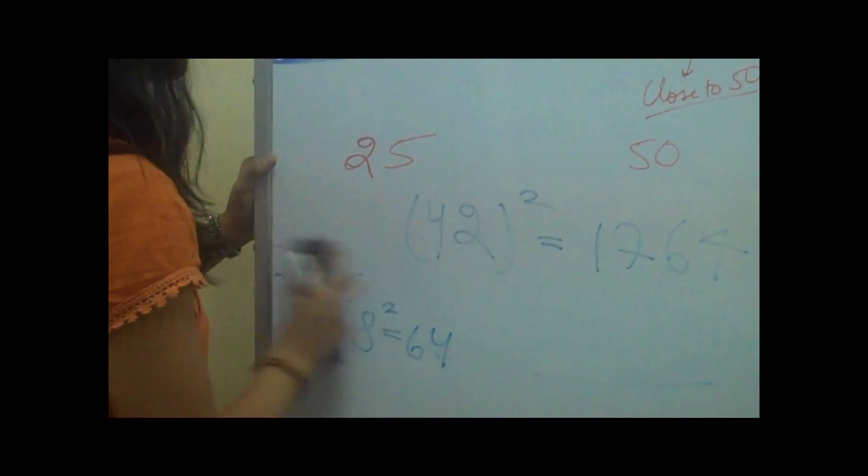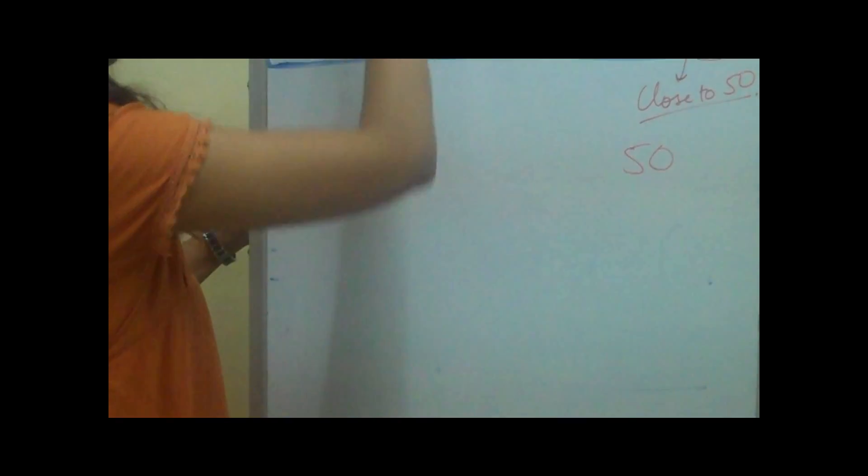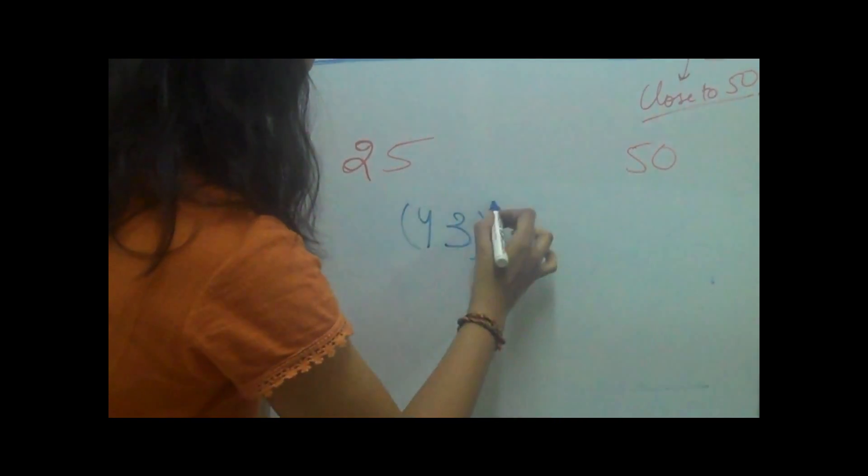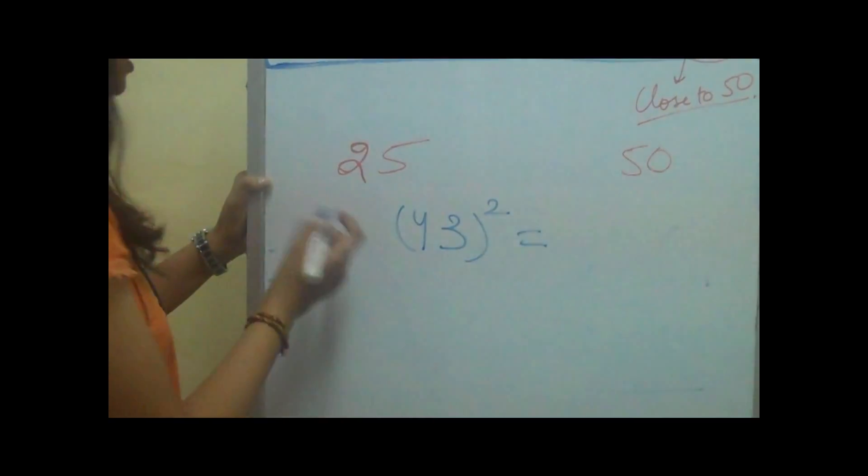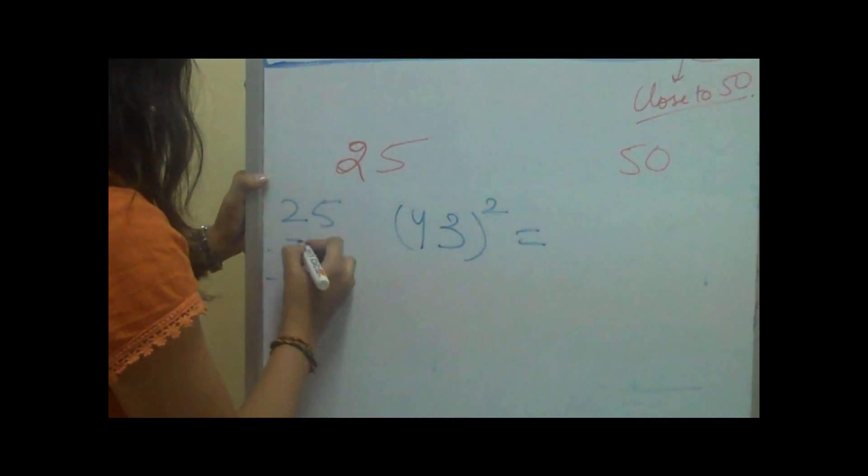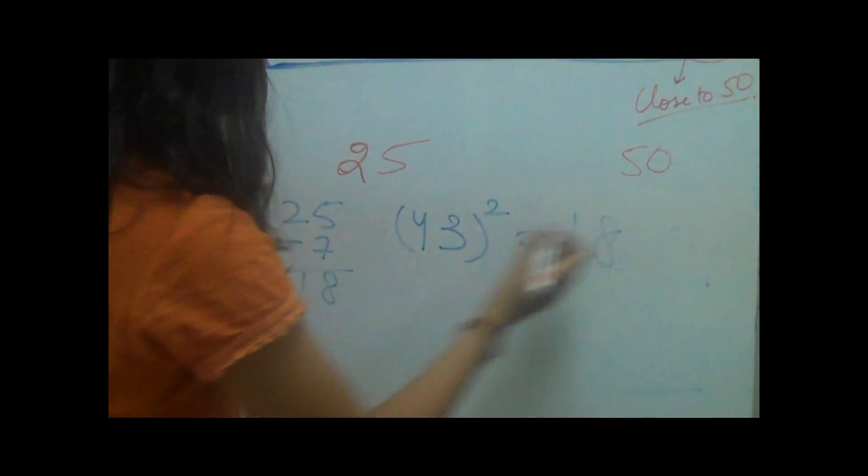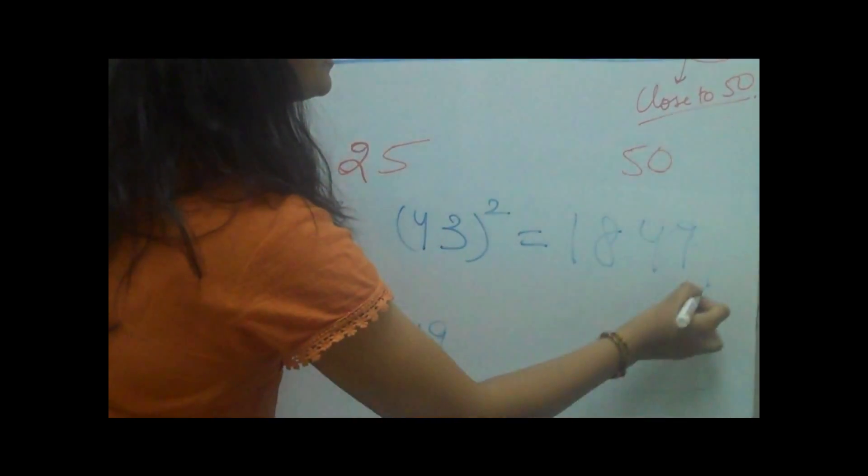Let's take another example for numbers which are less than 50. For example if you have a number 43 and you want to square it. 43 is 7 less than 50. We'll subtract 7 from 25 which makes 18 and then we'll square the 7 which makes 49. This is the answer.